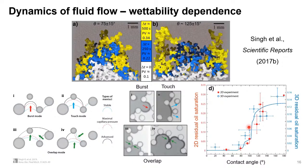This means that even above 90 degrees you can still be in the domain of imbibition-like processes with a flat front and no trapping. What's happening is mostly cooperative processes — one interface comes from this side, a second from this side, and they merge. Or you can see a touch event where the interface touches an obstacle before the jump happens. On the other side we see Haines jumps, also called bursts, where once it overcomes the threshold it jumps to the next pore. This was explained in great detail by Stephan Berg with 3D imaging.